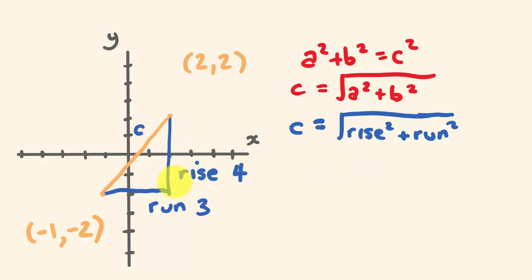So the rise, we've gone up 4, 4 squared. Okay, we've gone across 3, 3 squared. We're going to add those together, and then square root it.